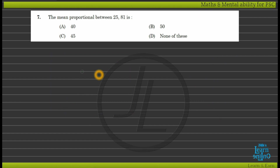The mean proportional between 25 and 81 is a different type of question.